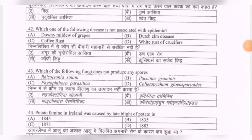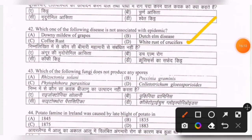Next question: which one of the following diseases is not associated with an epidemic? Options are downy mildew of grapes, Dutch elm disease, coffee rust, white rust of crucifers. The correct option is D — white rust of crucifers.